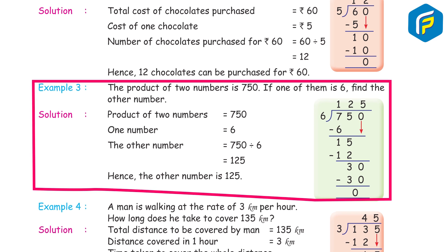Example 3: The product of two numbers is 750. If one of them is 6, find the other number. Solution: product of two numbers = 750, one number = 6. The other number = 750 ÷ 6 = 125. Hence, the other number is 125.